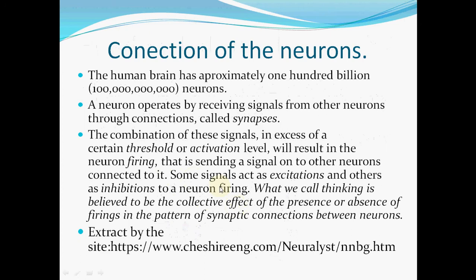The combination of these signals in excess of a certain threshold or activation level will result in the neuron firing — that is, sending a signal onto other neurons connected to it. Some signals act as excitation and others as inhibition through a neuron firing. What we call thinking is believed to be the collective effect of the presence or absence of patterns in the synaptic connections between neurons.